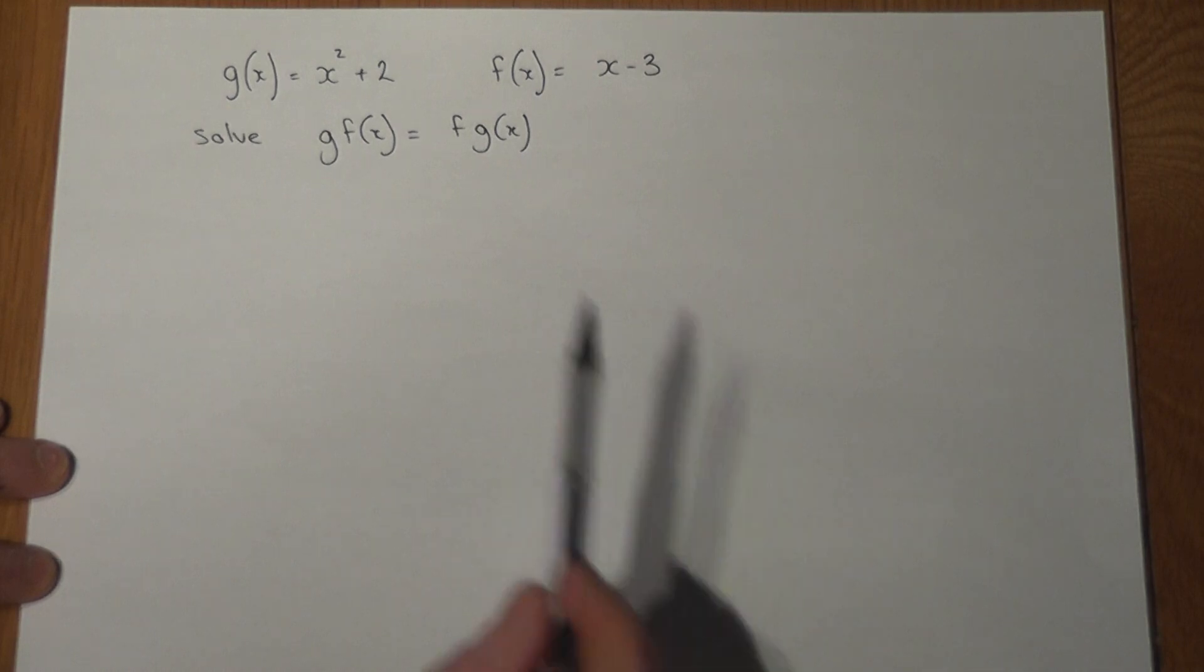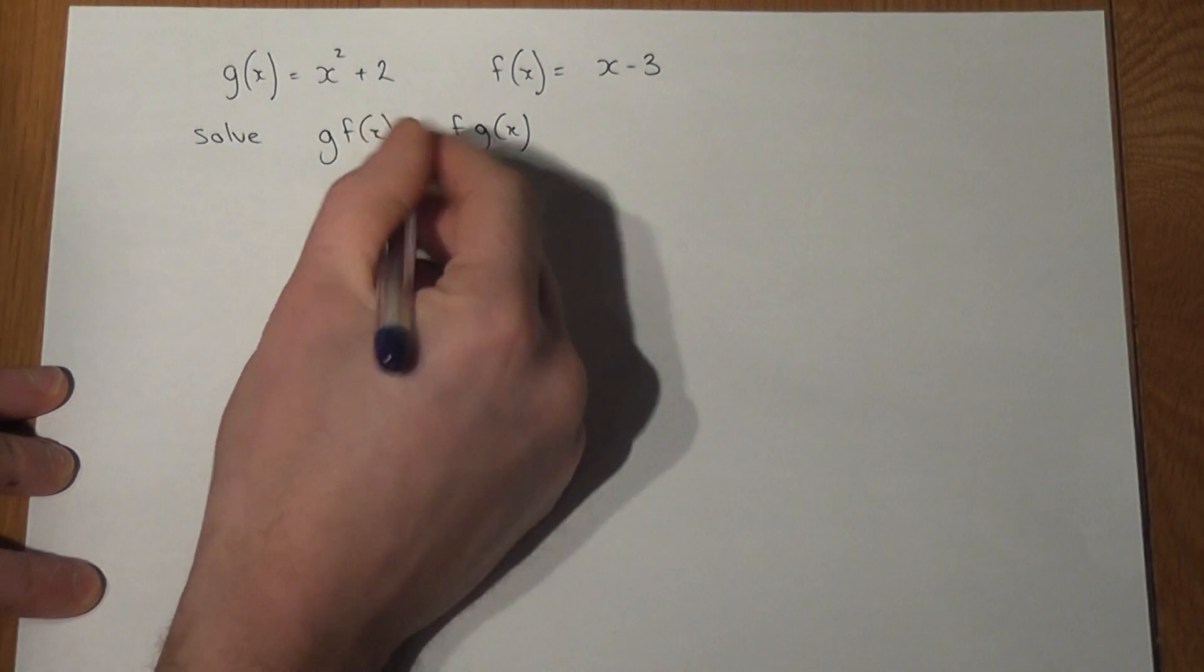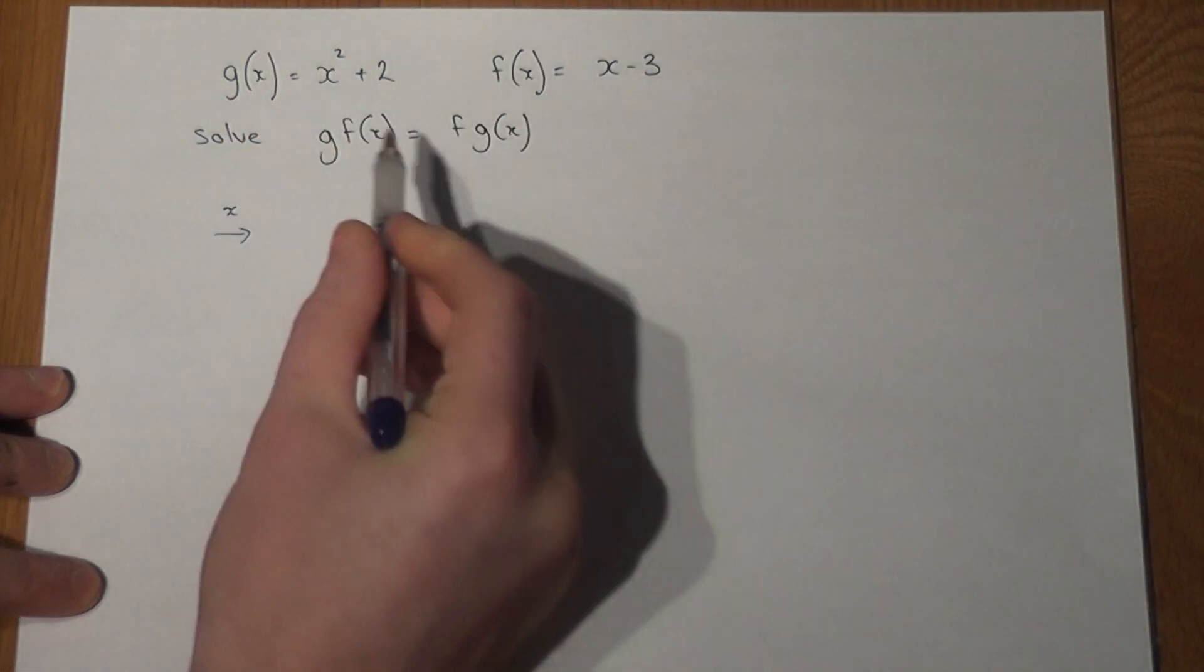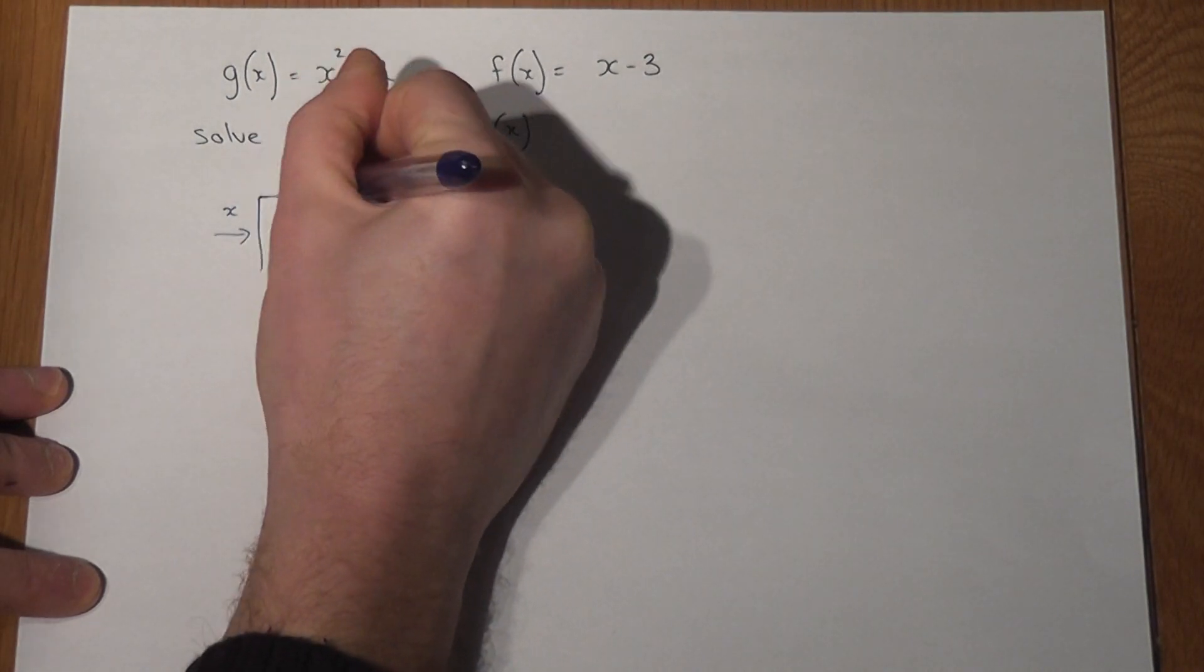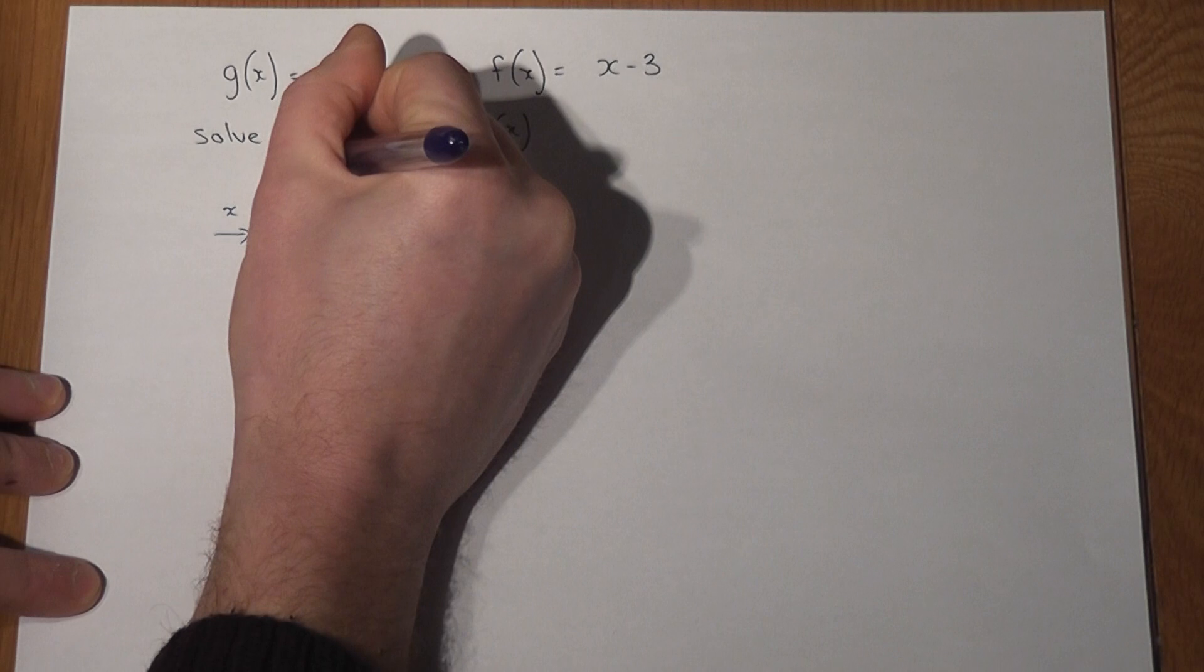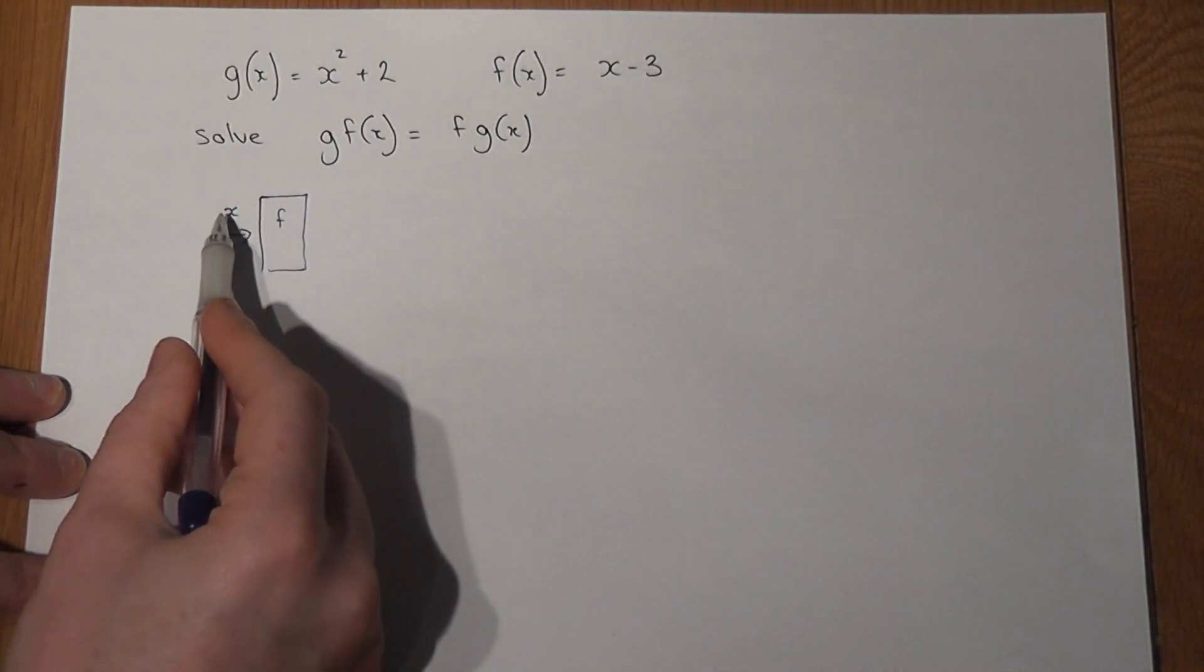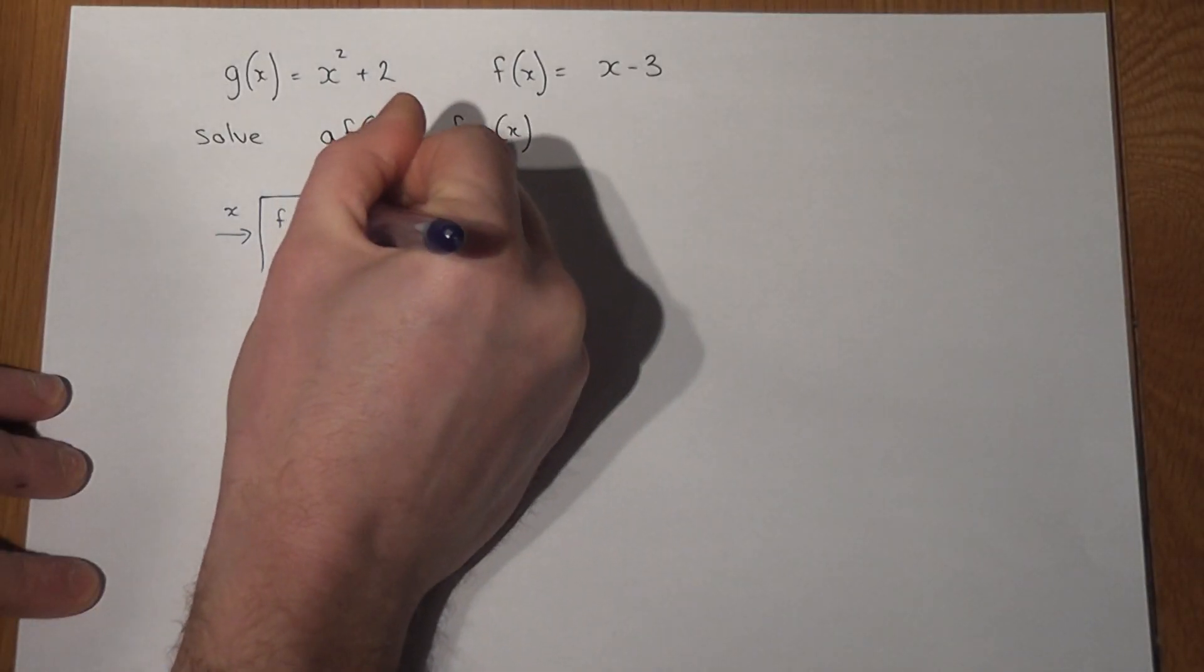Now as a quick review, g f of x means the following: first we have x as an input and the function f of x happens first, and f of x is the input takeaway 3, so x goes into the function and x minus 3 is then the output.